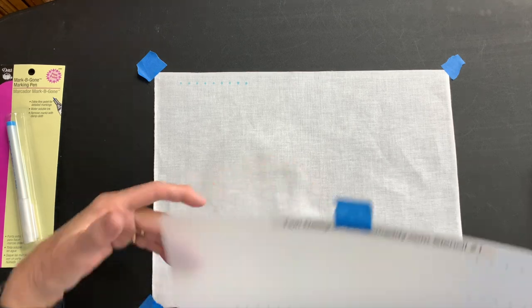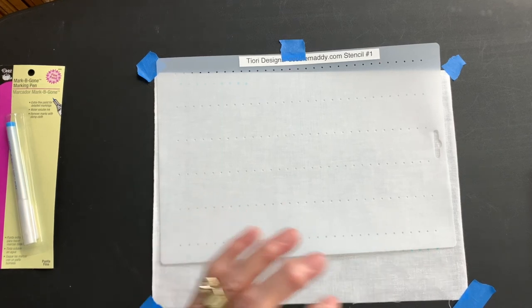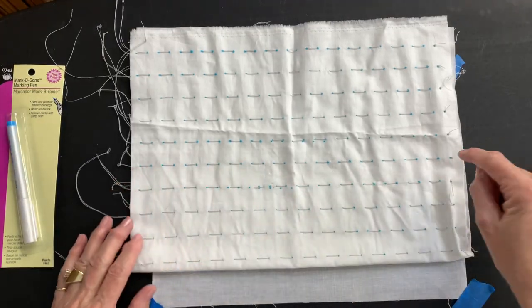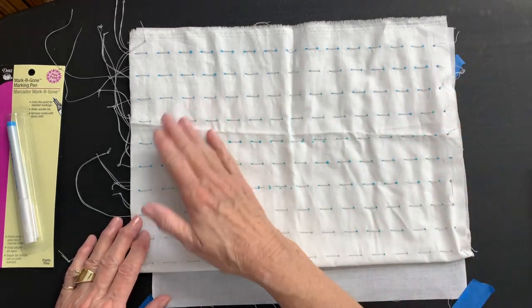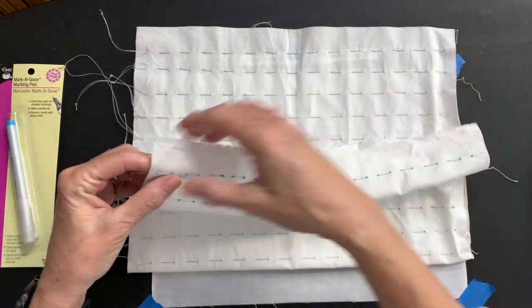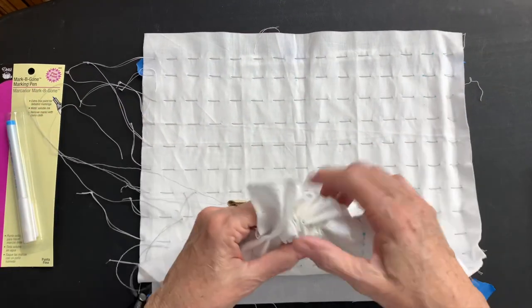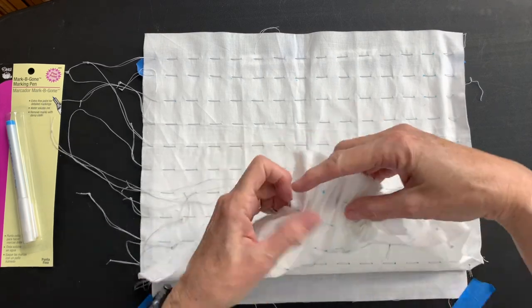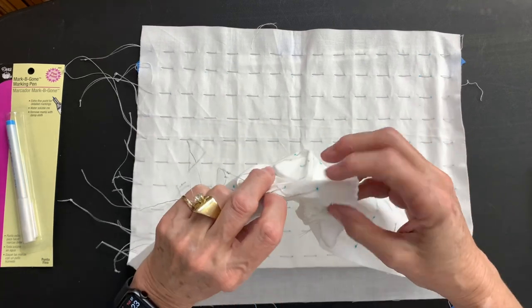Once you have this marked, then you're going to stitch. Now on this particular stencil, I stitched just a running stitch. I went down, up, down, up, all the way across. And then when you pull it up, you can see you sit there and you get it pulled up. And then when you pull it like this, you end up with tiny little pleats.